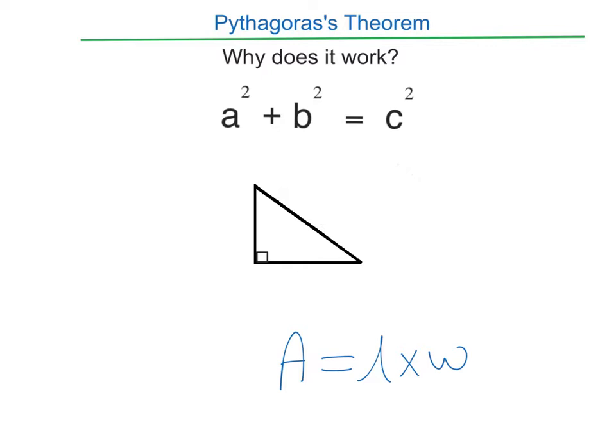But before we do that we need to label the sides. The longest side is called the hypotenuse, and in the equation it's going to be c. It's by itself on one side of the equal sign. It's the longest side and it's opposite the right angle, so the longest side opposite the right angle is always going to be c.